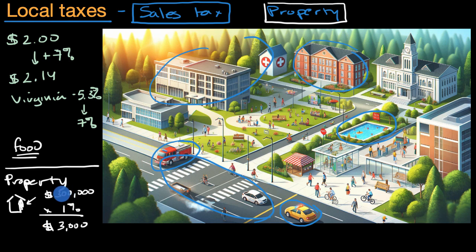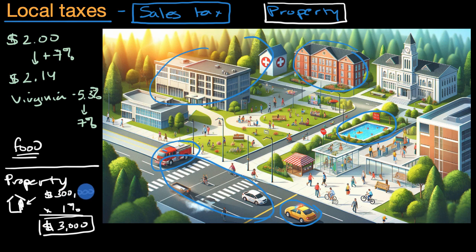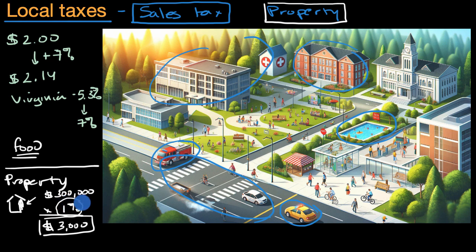If next year they assess that your property is still $300,000, then you're going to pay $3,000 the next year as well. If your property goes up in value, it's going to be 1% of that, so your property tax will go up. This is a significant tax, especially if you have a much more valuable property or if the property taxes in your area are much higher than 1%. In certain places, there are also personal property taxes, where they assess the value of things you could move around like a boat or a car, and they tax you similarly on an annual basis.